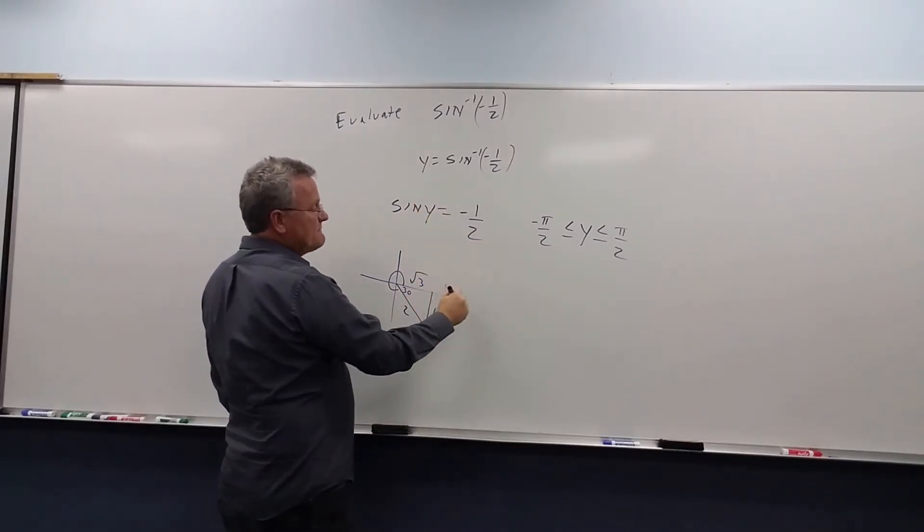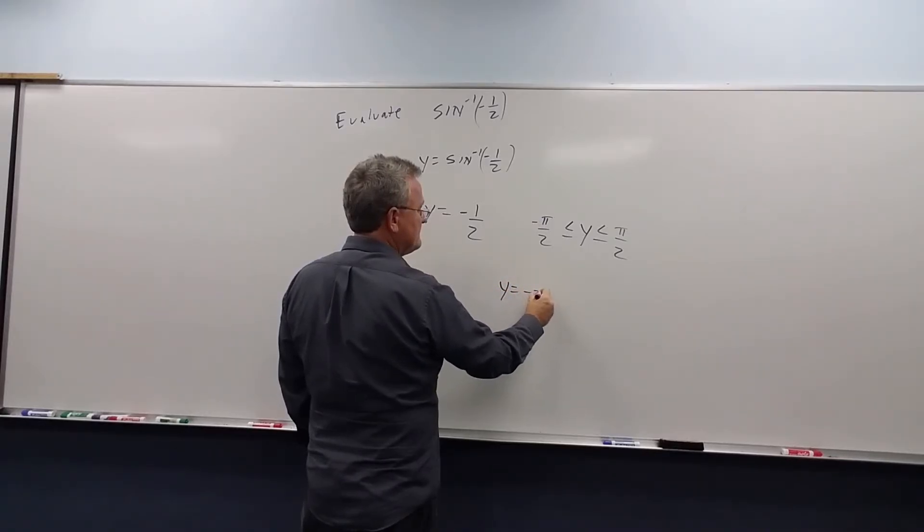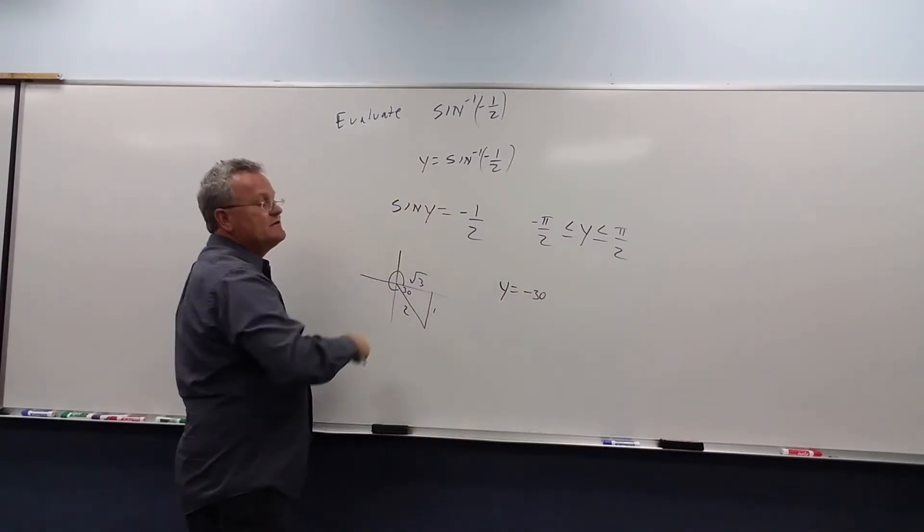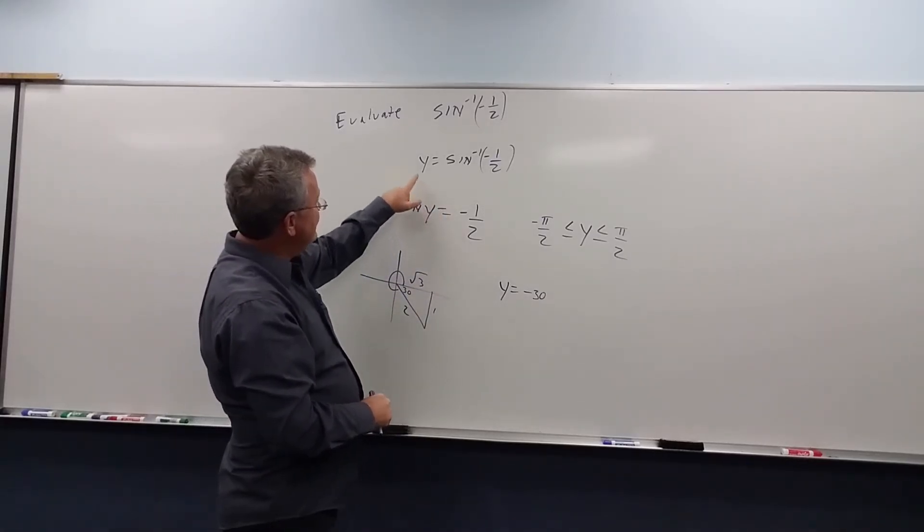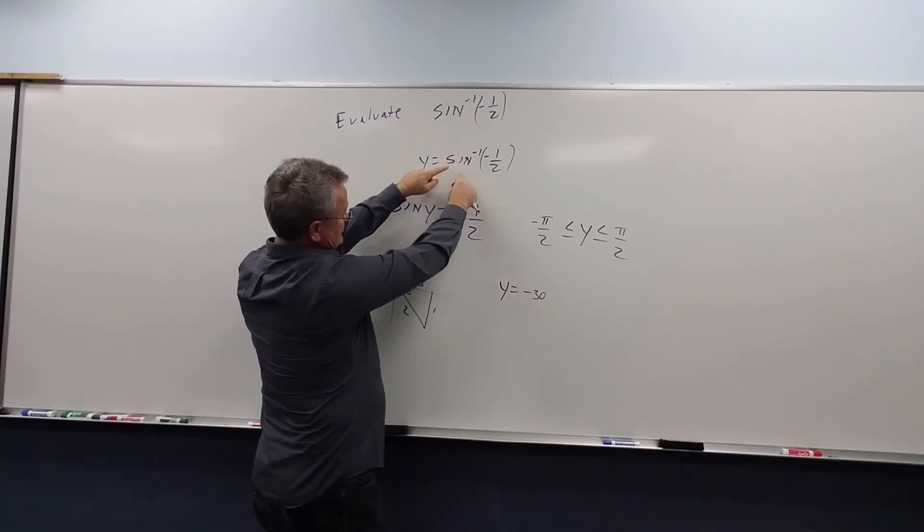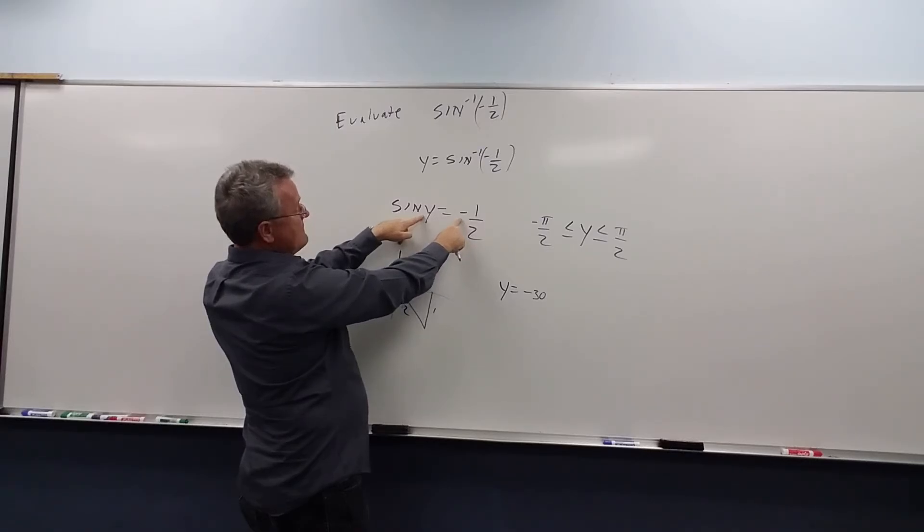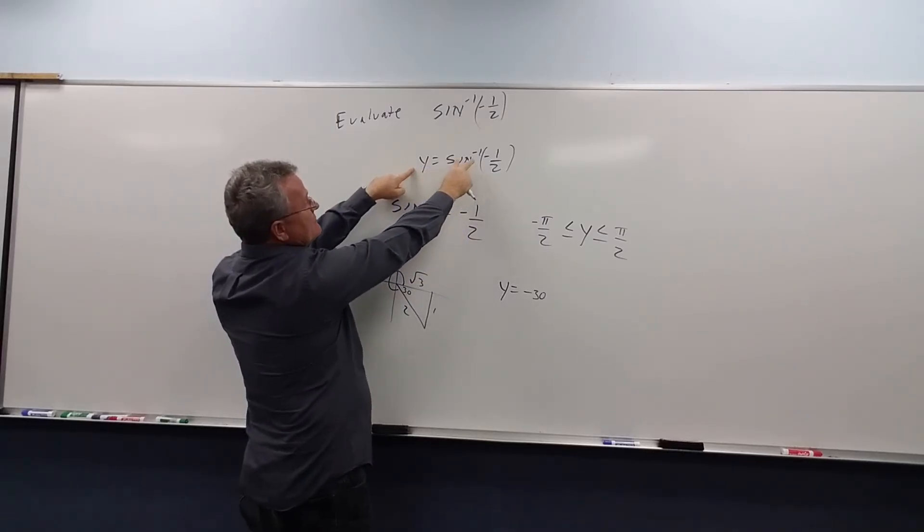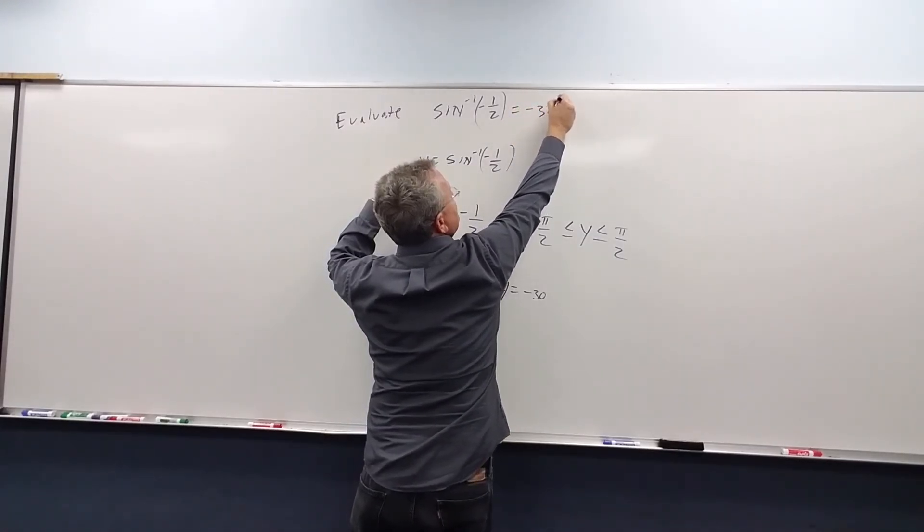Therefore, the sine of negative 30 is negative 1/2. y is equal to negative 30. So that's what this is. We found the sine of negative 30 is negative 1/2, y is negative 30. Therefore, this is equal to negative 30 degrees.